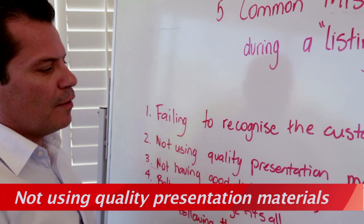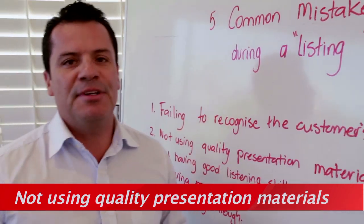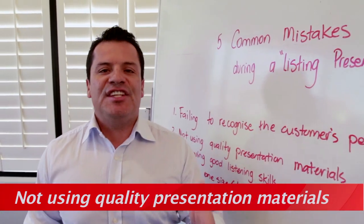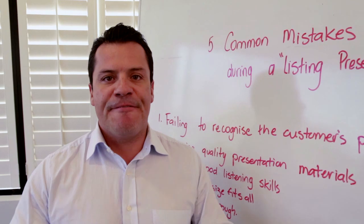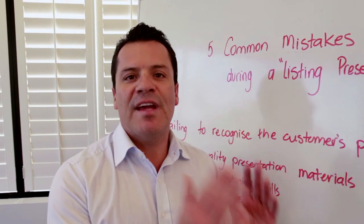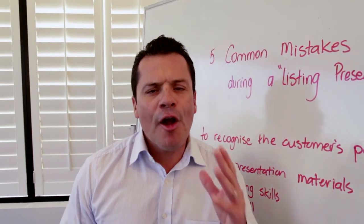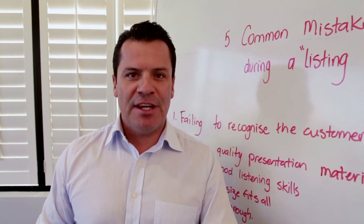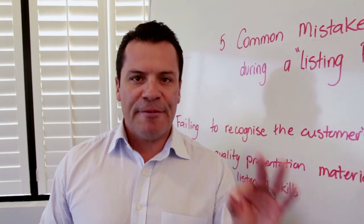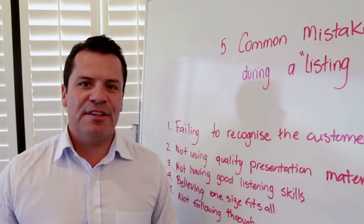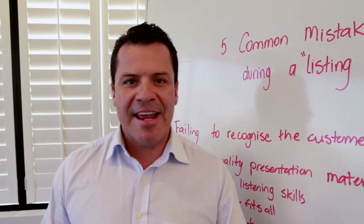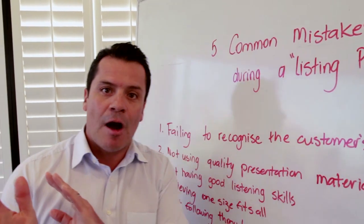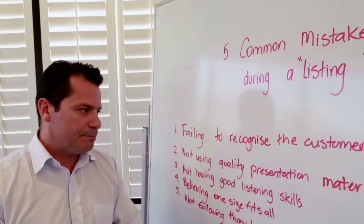Number two is not using quality presentation materials. If you're not standing out, you're fitting in with all the other agents. I heard this expression once: average achievers try to fit in, ultra achievers look at standing out. Which one are you — the average achiever or the ultra achiever?